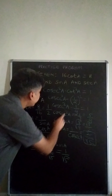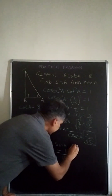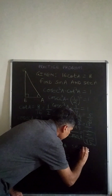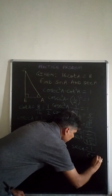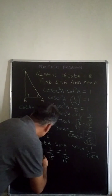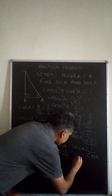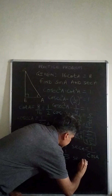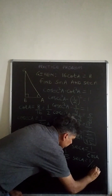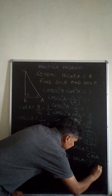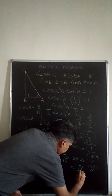Now we have to find sec A. Sec A equals 1 upon cos A. Since cos A is 1 upon root 5, substituting here, sec A equals 1 divided by 1 upon root 5, which gives sec A equals root 5.